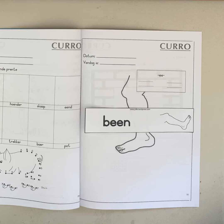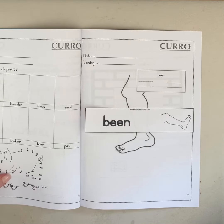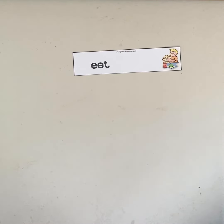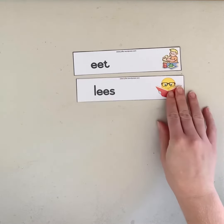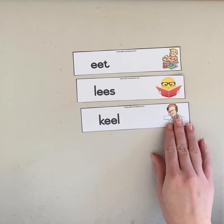Then we went through lots and lots of different words with the ear sound yesterday. Do you remember that? So let's look at some of these words again that you can put on the other lines. We know been. We also have eet, which is eat; lees, which is read; keel, which is throat.